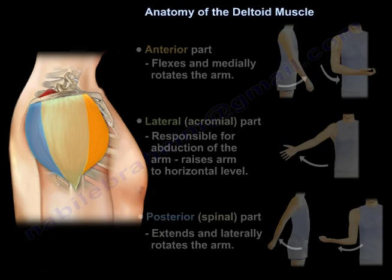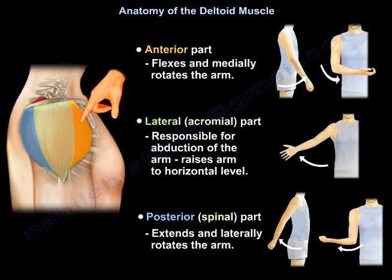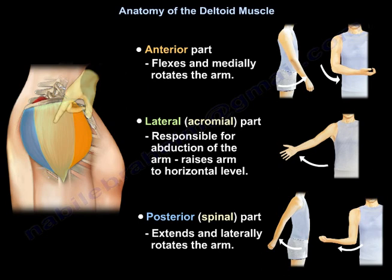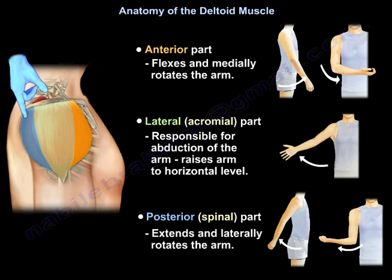The anterior part of the deltoid muscle flexes and medially rotates the arm. The lateral part of the deltoid muscle is responsible for abduction of the arm, which raises the arm to the horizontal level. The posterior part of the deltoid muscle extends and laterally rotates the arm.